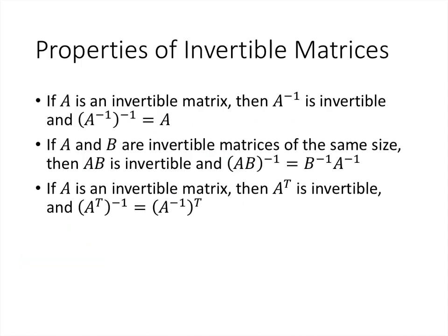Here are some nice properties of inverses. If A is an invertible matrix, then A inverse is also invertible, and the inverse of A inverse is just A — taking the inverse twice gets us back to where we started. If A and B are invertible matrices of the same size, then AB is also invertible, and the inverse of AB is B inverse A inverse.